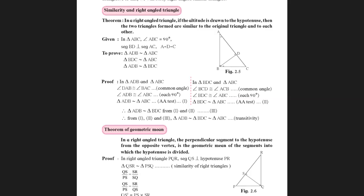Similarly, consider triangles BDC and ABC. The common angle here is angle C — angle BCD equals angle ACB. Again, angle BDC and angle ABC are both 90 degrees. Therefore, these triangles are also similar by the AA test. And since both pairs are similar by transitivity, it follows that triangle ADB is similar to triangle BDC. This theorem is important as it is used to prove Pythagoras theorem, its converse, and other related theorems.